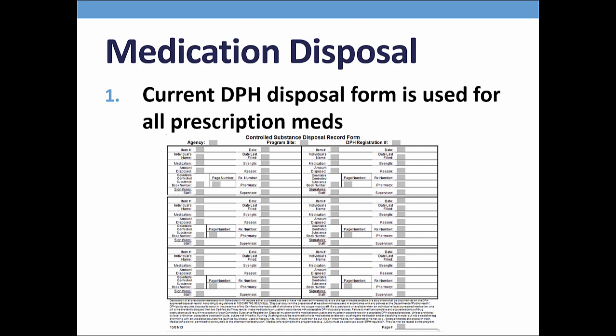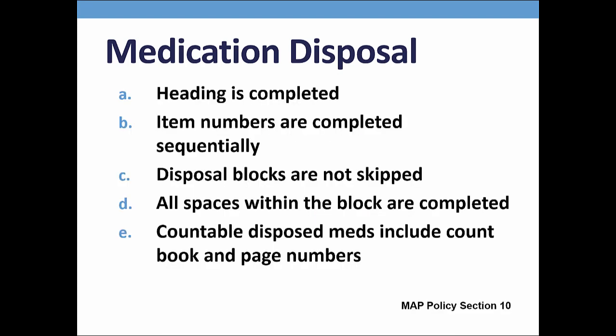On the disposal form, be sure the heading is completed with the agency name, site address, and MCSR number. The item number is a chronological listing of meds disposed. Each disposal form has room to document the disposal of six different meds; the next page would start with item 7 and so on. You can categorize the disposal records year by year, starting each year with item number 1/the year. Do not skip disposal blocks and do not separate disposal forms out by individual. If the med is countable, be sure to fill in the countbook number and countbook page number for cross-referencing.